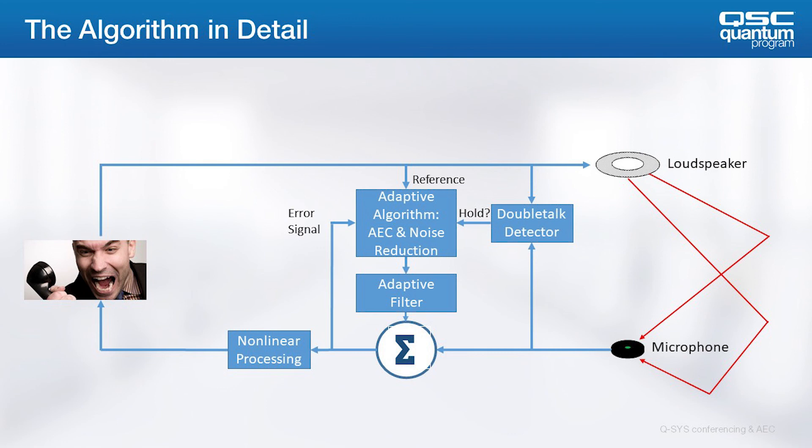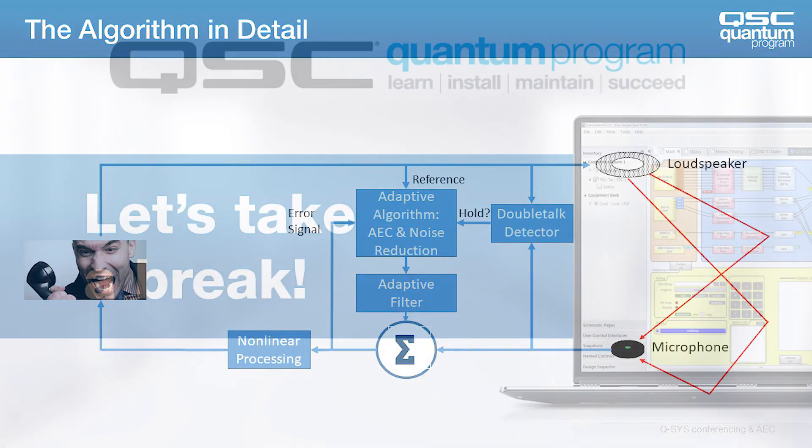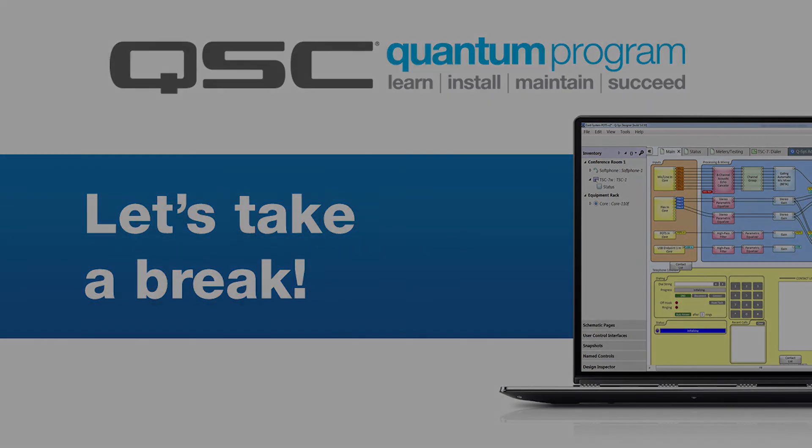As you can see, this is one of the most advanced uses of audio DSP out there. There are other features in the Q-SYS algorithm that add even more complexity, and we'll discuss those in detail later. For now, let's take a quick break, and continue along whenever you're ready.